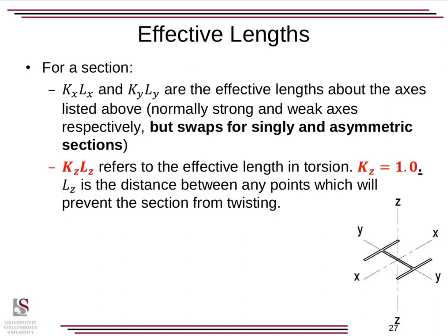Finally, just effective lengths. KLx and KLy are the effective lengths about the axes listed — normally strong and weak, but they swap for singly symmetric and asymmetric sections. KzLz refers to the effective length in torsion. Unless told otherwise, you can take Kz as one. Lz is the distance between any points which prevent the section from twisting, but Kz equals one is a safe assumption in this course, though there are international guidelines to go beyond that. And that brings us to the end of the introduction — the rest of the videos will follow on and fill in the gaps. Thank you.